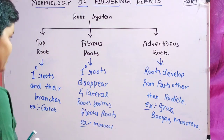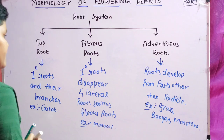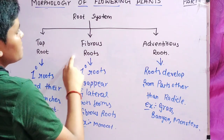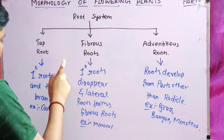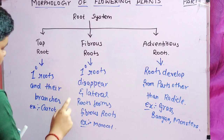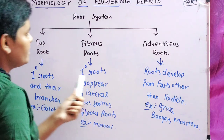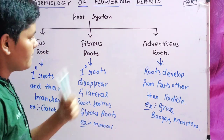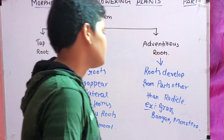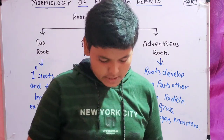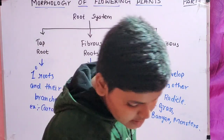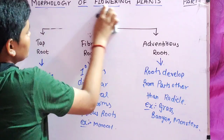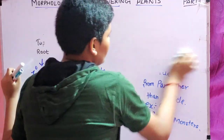So these are the three types of root system: tap root, fibrous root, and adventitious root. Primary roots and the branches consist of the tap root. In fibrous roots, the primary roots disappear and fibrous roots dominate. Adventitious roots are roots which develop from parts other than the radicle. This is the main summary of what is the root system.